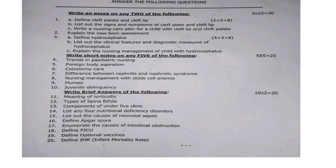Short notes — write short notes on any five of the following: 4th — trends in pediatric nursing; 5th — foreign body aspiration; 6th — colostomy care; 7th — differentiate between nephritis and nephrotic syndrome; 8th — nursing management of sickle cell anemia; 9th — mumps; 10th — juvenile delinquency. 5 × 5 = 25 marks.